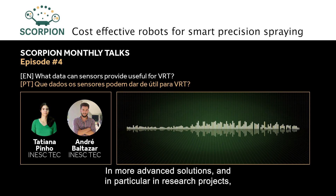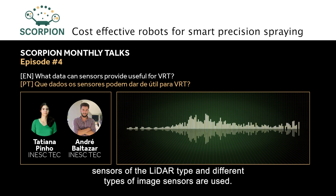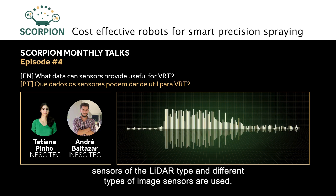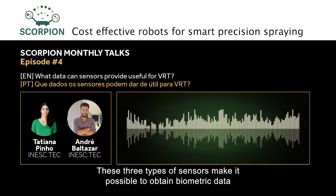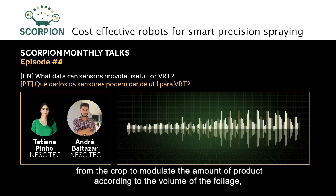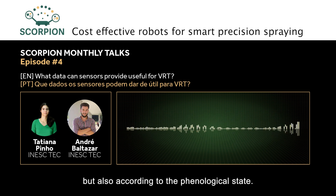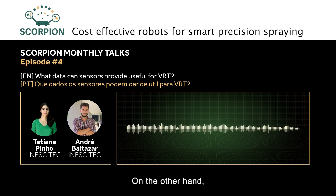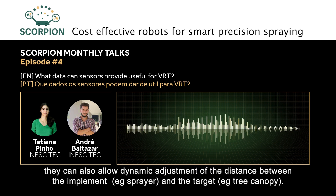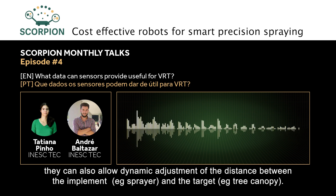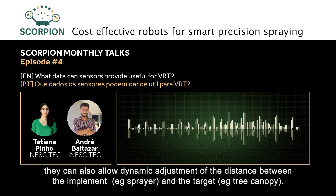In more advanced solutions, and particularly in research projects, LiDAR-type sensors and different types of image sensors are used. These three types of sensors allow biometric data of the crop to be obtained to model the quantity of product according to the volume of foliage, but also according to the phenological state. They can also enable dynamic adjustment of the distance between the implement — for example, the sprayer — and the target, in this case the tree canopy.